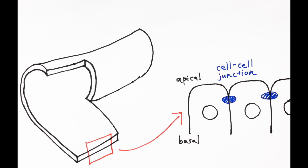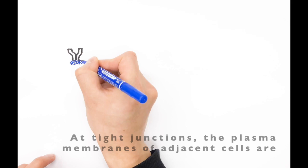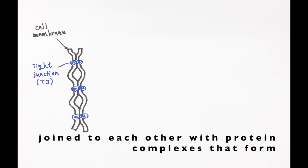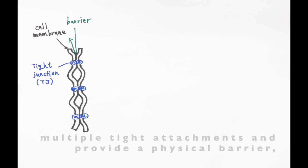Tight junctions are points of cell-to-cell adhesion at the upper part of the epithelial cells. At tight junctions, the plasma membranes of adjacent cells are joined to each other with protein complexes that form multiple tight attachments and provide a physical barrier, preventing free diffusion of molecules.